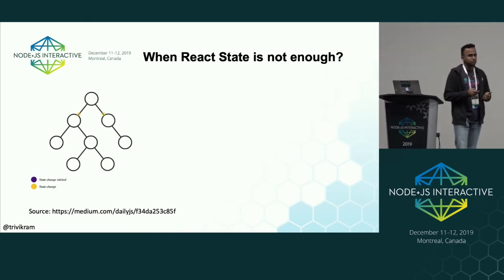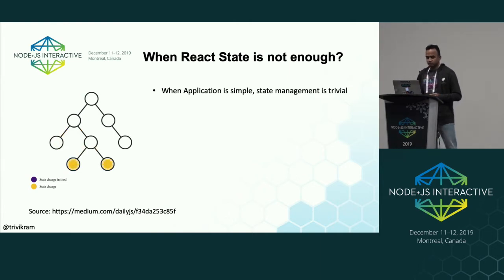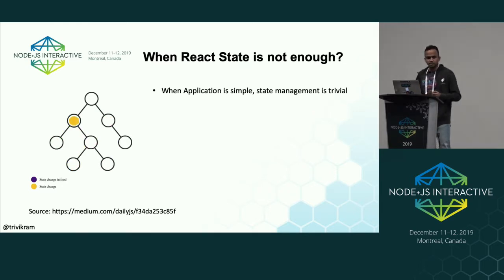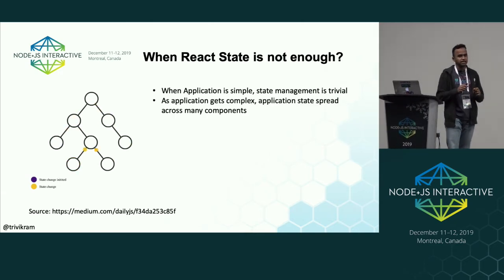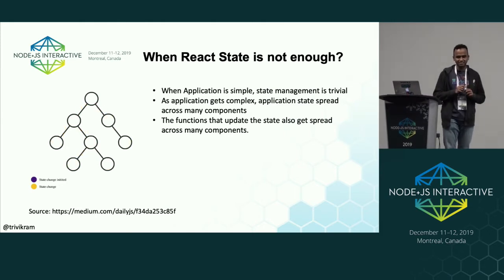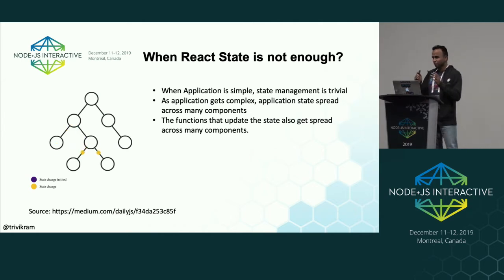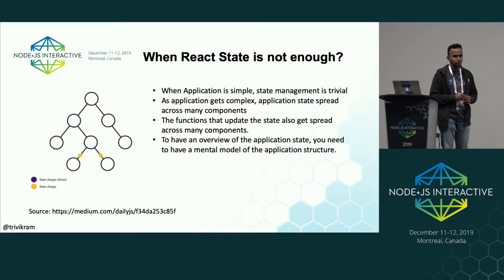When React state is not enough: when an application is simple, state management is trivial. But as the application gets complex, application state is spread across multiple components, and the functions that update state also get spread across many components. In the beginning you are very happy, but when your app becomes complex it becomes difficult to manage state. To have an overview of the application state you need a mental model of the application structure — making it difficult for any new developer who joins.